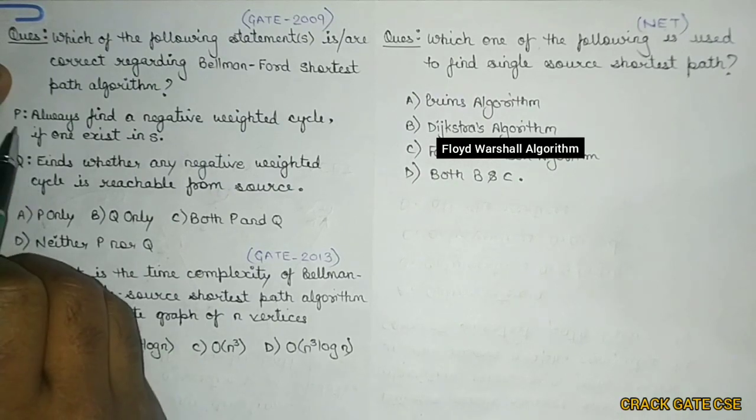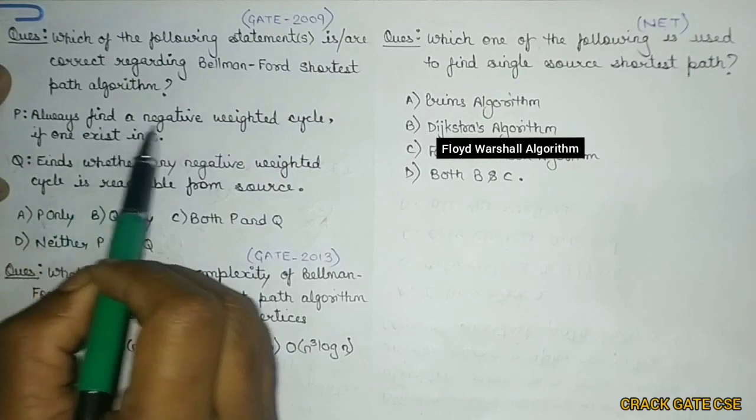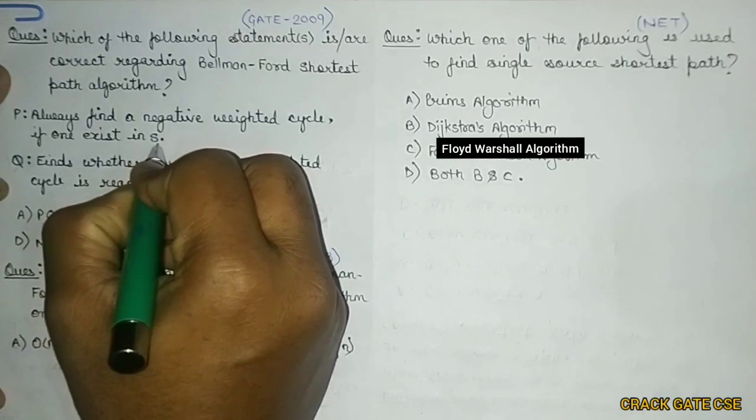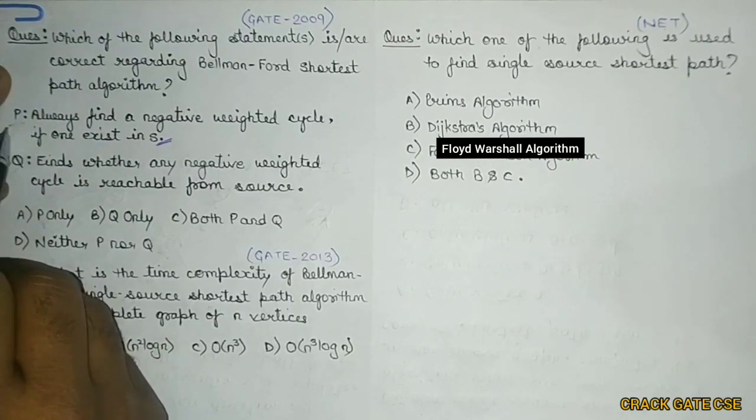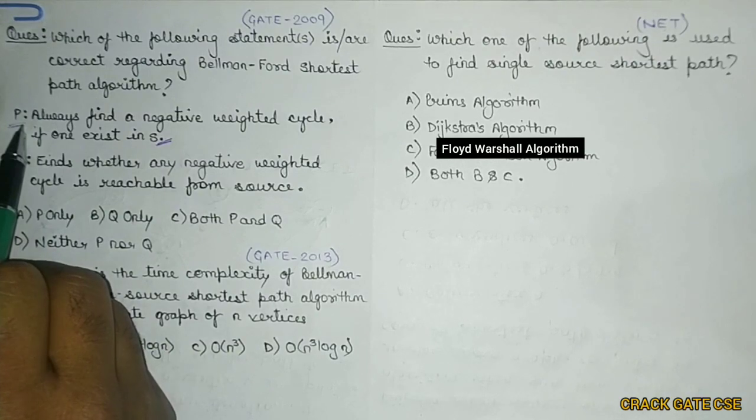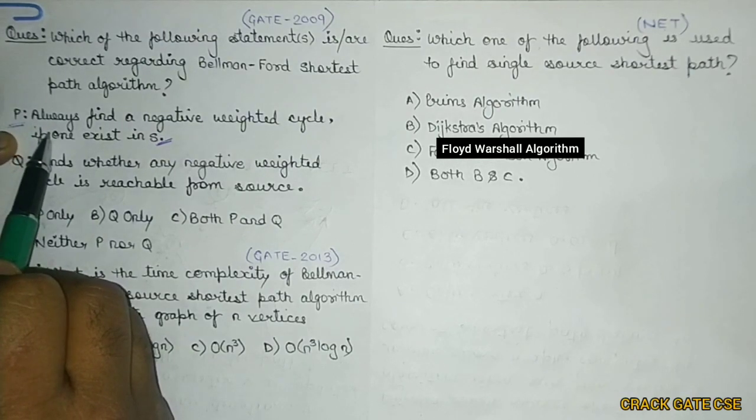So what the P statement says is that the Bellman-Ford algorithm always finds a negative weighted cycle if one exists. Yes, this is true if there is only one component in the graph. That means if there is a disconnected component, this P statement may fail because the disconnected component does not have any adjacent edges from first component to the second component. In that case, it will fail.